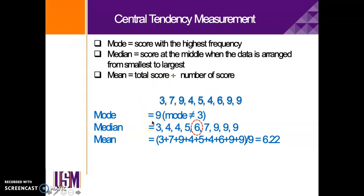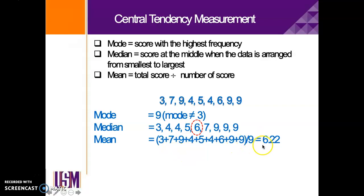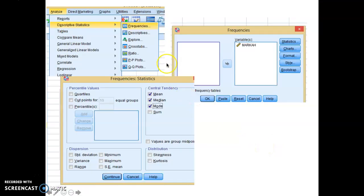For the median, you need to arrange the scores from smallest to largest. After arranging them, the order is: 3, 4, 4, 5, 6, 7, 9, 9, 9. The score in the middle is known as the median, which here is six. For the mean, it is the total score divided by the number of scores — 3+7+9+4+5+4+6+9+9, divided by nine. The mean here is 6.22.